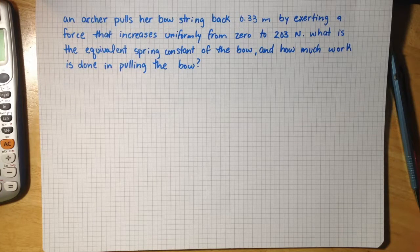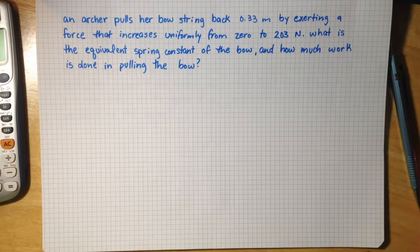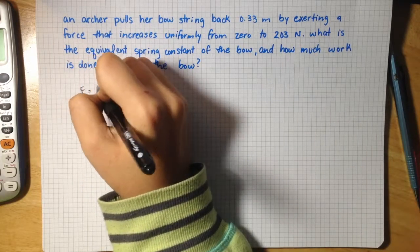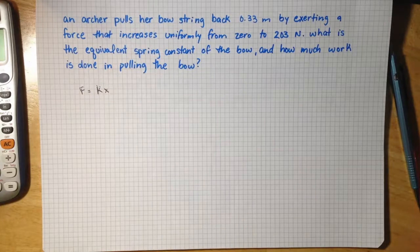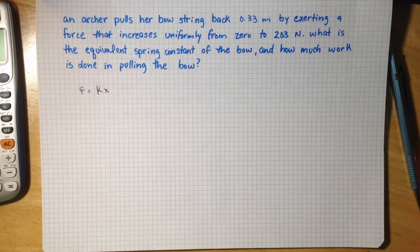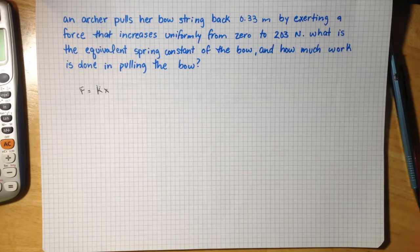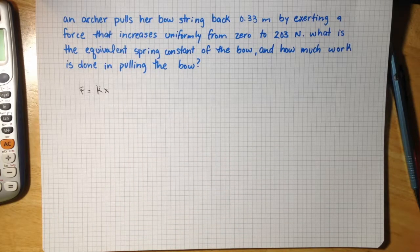So the first part of the question asks for the spring constant of the bow. For this I'm going to use the equation f equals kx, where the force of the spring system is equal to the spring constant times the distance the spring is pulled or compressed or stretched.